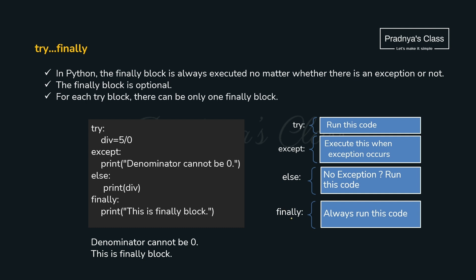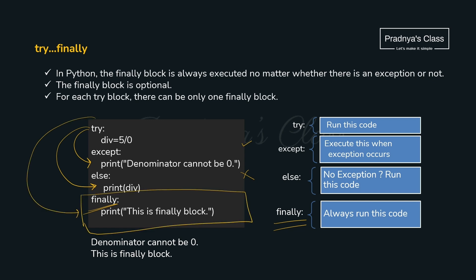There is one more block — the finally block. In case an exception gets raised, we come to the except block. If an exception does not get raised, we come to the else part. But the finally block will always execute whether the exception is raised or not — the control will always come to the finally block. Generally this block is used to close connections in case of a database or file, because whether an exception arises or not, we need to perform that cleanup. Finally block is completely optional, and there can be only one finally block.